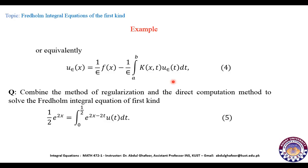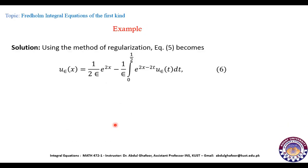Now let's try a specific example to apply the method of regularization and the direct computation method. We consider the Fredholm integral equation of the first kind given in equation 5. Comparing equation 5 with equation 2, f(x) = e^(2x)/2 and K(x,t) = e^(2x−2t). To apply the method of regularization, we first convert equation 5 to a Fredholm integral equation of the second kind, giving: u_ε(x) = (1/(2ε)) e^(2x) − (1/ε) ∫_0^(1/2) e^(2x−2t) u_ε(t) dt.